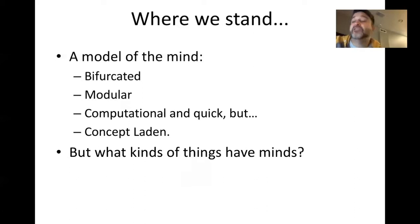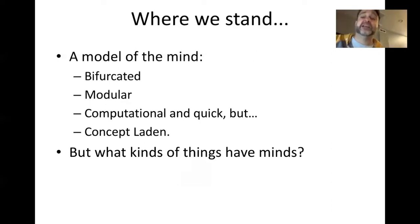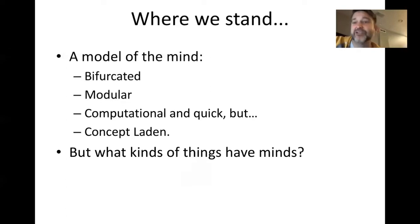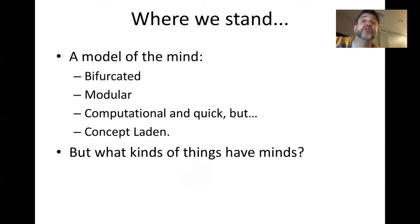But we still haven't really answered the question: what kinds of things have minds? And in effect, two of the things you've looked at for this week are attempting to answer this question. Some of the other works will look at just how far our minds extend — can my mind encompass things found in my notebook or on the internet? That's the external mind thesis we'll discuss later. But a more basic question is: what kinds of things have minds? Does it require a physical body to have a mind?